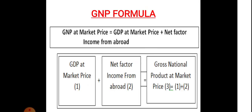How can we calculate GNP? GNP is very easy: GDP at market price plus net factor income from abroad, especially from citizens, equals GNP at market price. This is a direct formula that can be asked in exams.